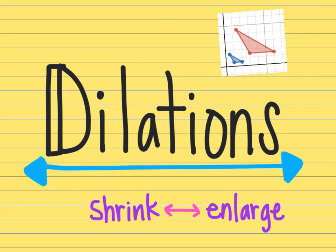Let's talk about dilations today. Dilations is a type of transformation and it changes the shape by shrinking or enlarging it. At the top of the screen you can see two different triangles — it can start with a small one and enlarge to be a big one, or it can go backwards and start big and shrink to be small. We're going to look at three examples of that in this video.